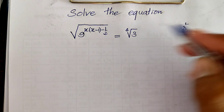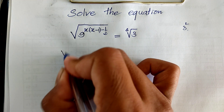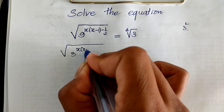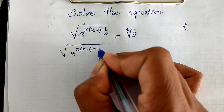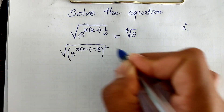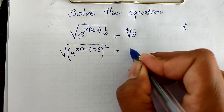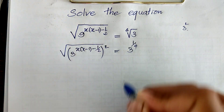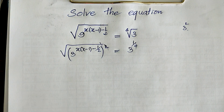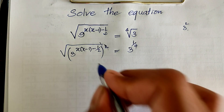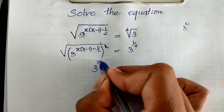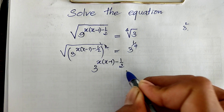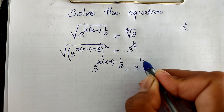So we can rewrite this as: square root of 3 to the power h(h minus 1) minus 1 divided by 2, all squared. And the right side we can also write as 3 to the power 1 divided by 4. So simplifying with the root, we get 3 to the power h(h minus 1) minus 1 divided by 2, equal to 3 to the power 1 divided by 4.